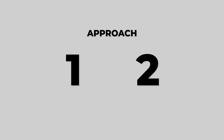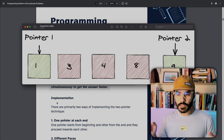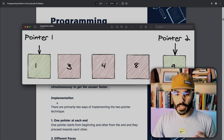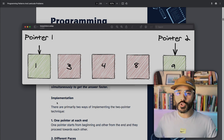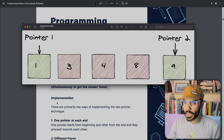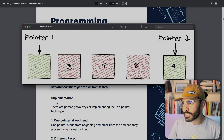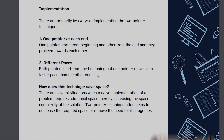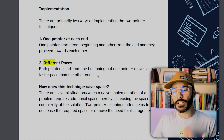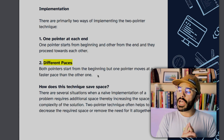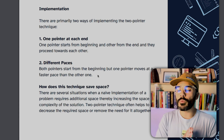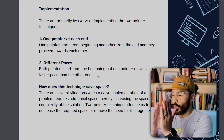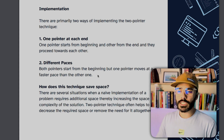There are primarily two ways of implementing the two-pointer approach. First, one pointer at each end — we start one pointer at each end and then walk them towards each other. We have one pointer at the beginning and one pointer at the end and we start moving them towards each other. The second way is at different paces — you start both items at the same position in an array and then move them towards the same direction, but just at different speeds.